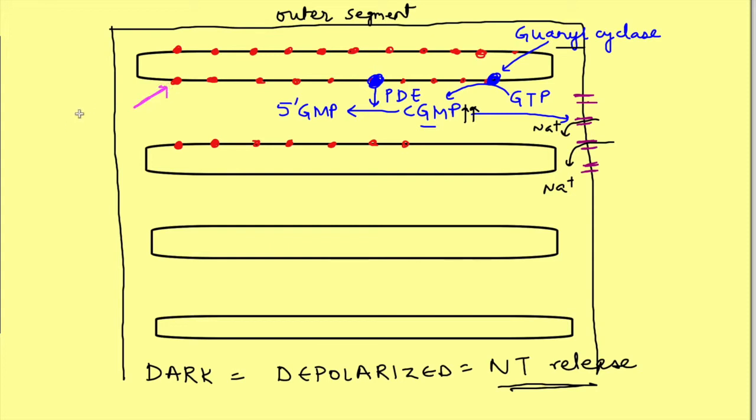In presence of light, as photons strike the photopigment, the enzyme phosphodiesterase is activated, decreasing the concentration of cGMP in the cell.